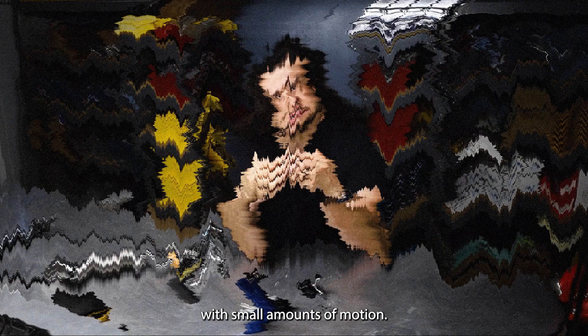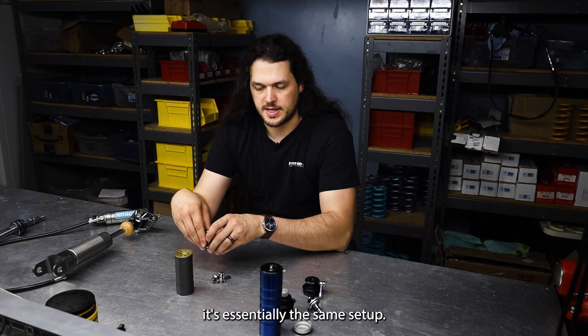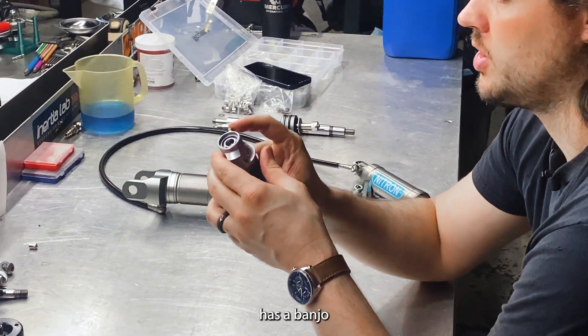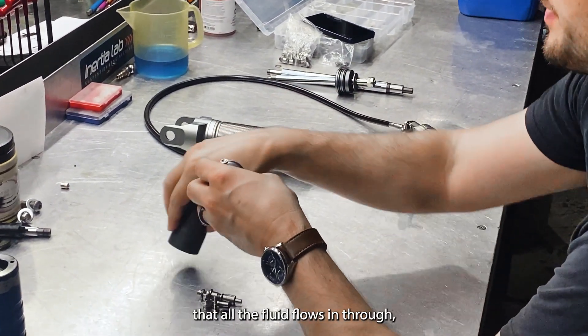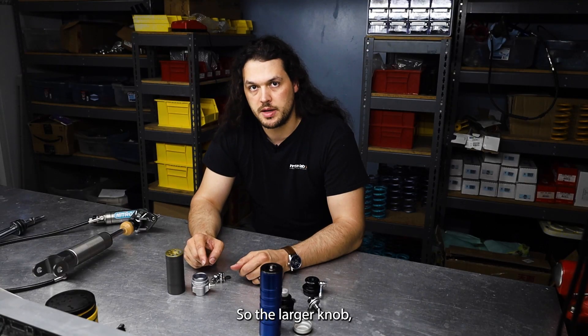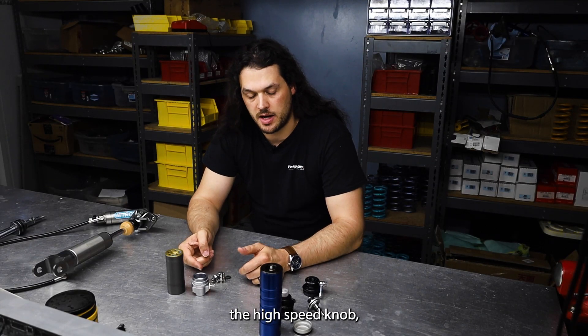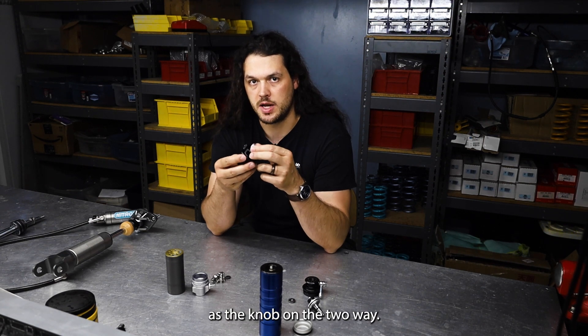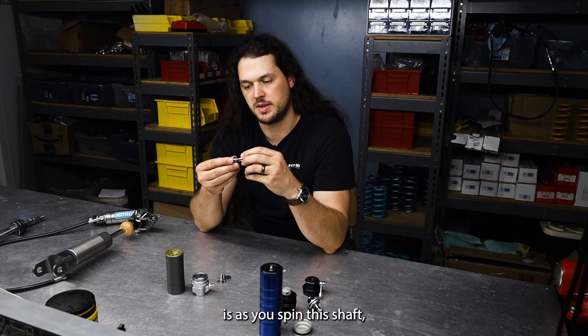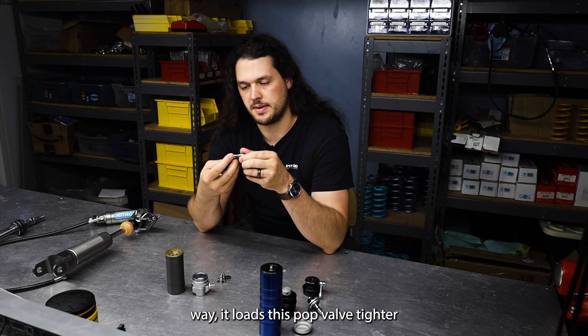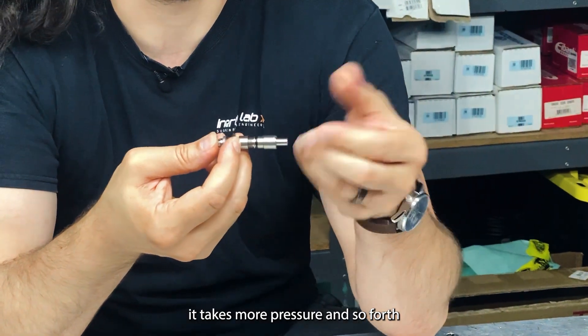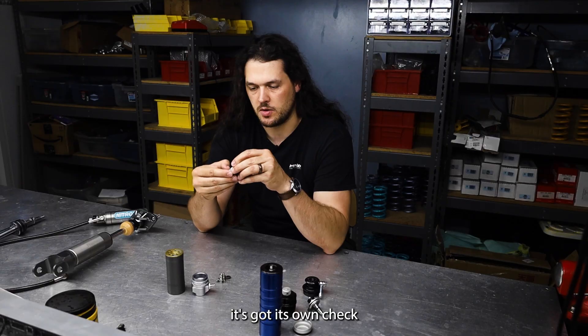Okay so moving on to the three-way, it's essentially the same setup. There's a lot of similarities. Has a canister, it has a banjo that all the fluid flows in through, except it's got two knobs on the top instead of just one. So the larger knob, what people often call the high speed knob, it does the exact same function as the knob on the two-way. It loads a poppet valve. Essentially what that does is as you spin this shaft, just like in the two-way, it loads this poppet valve tighter and tighter against the seat so it takes more pressure and so force to blow off the valve. It's got its own check valves and stuff in there.